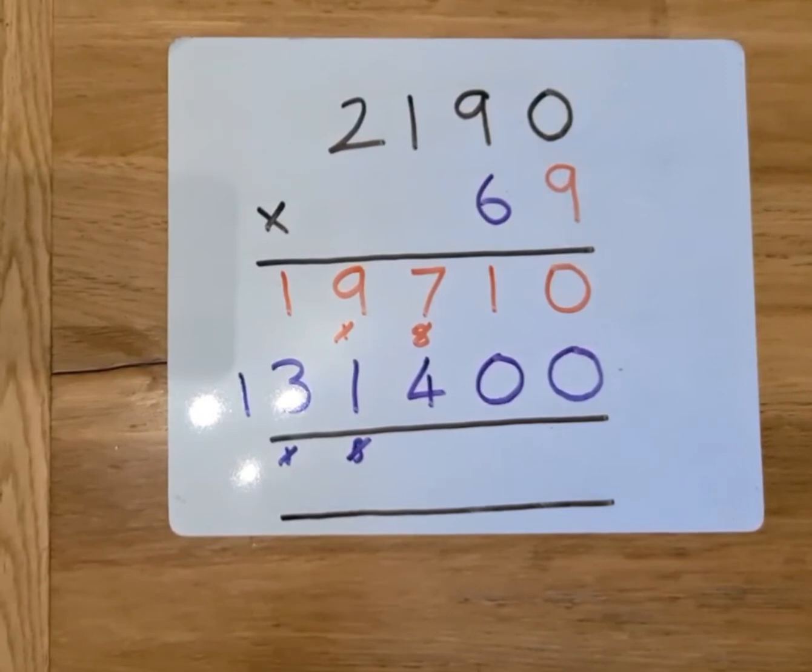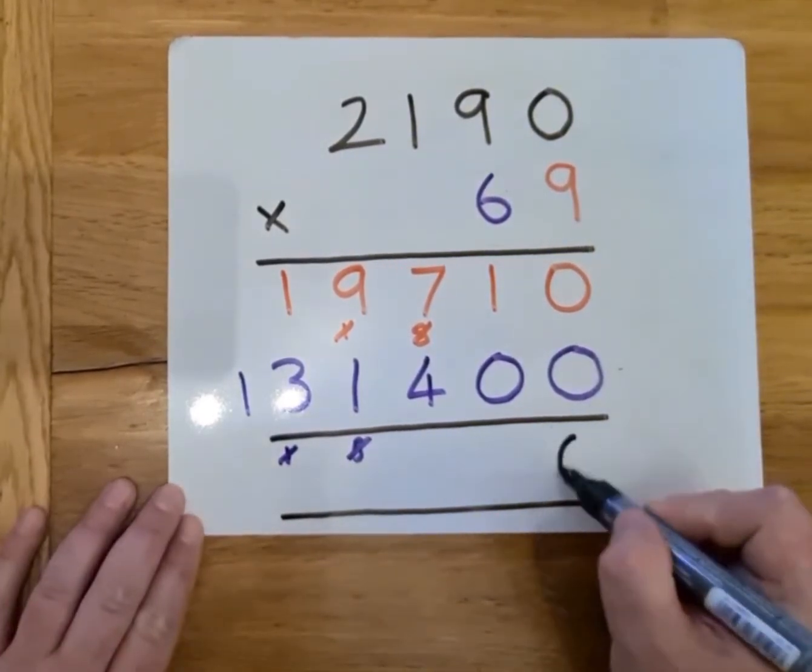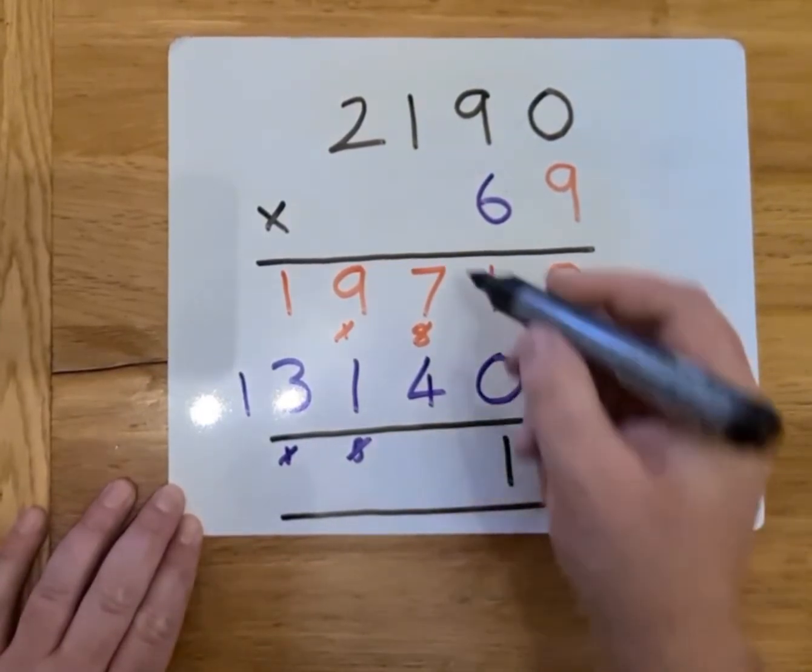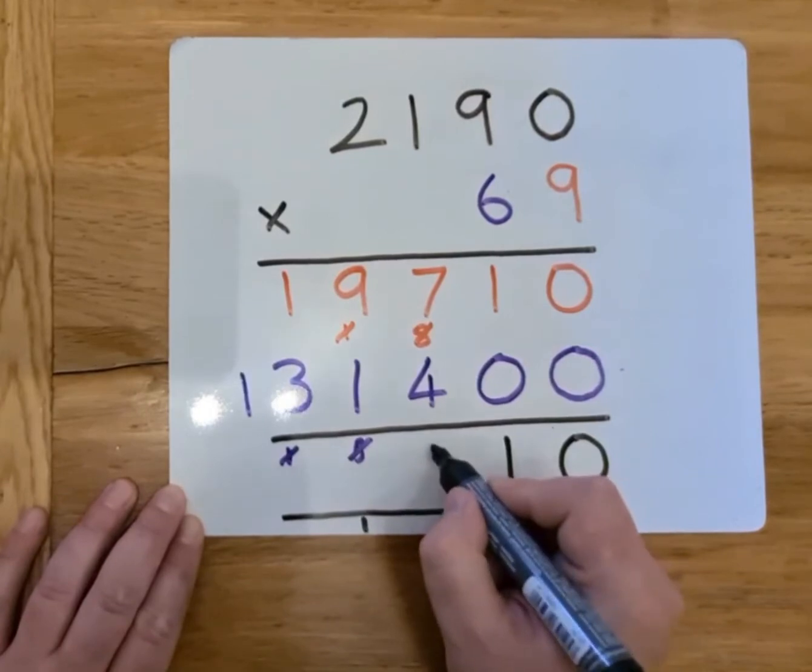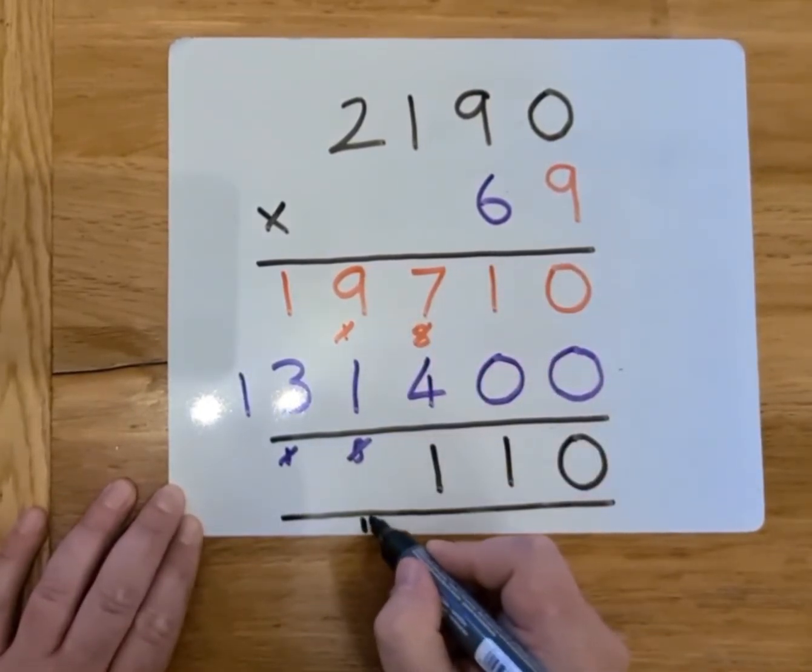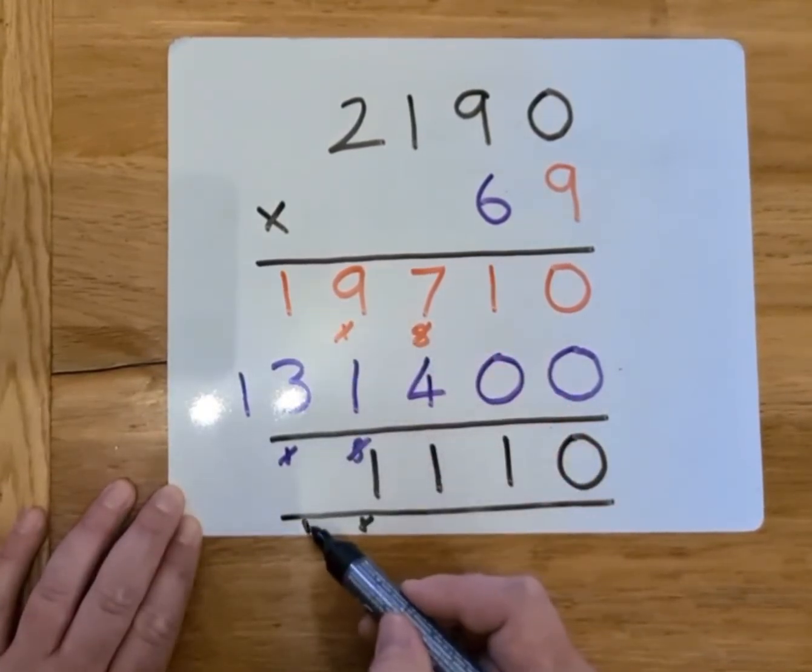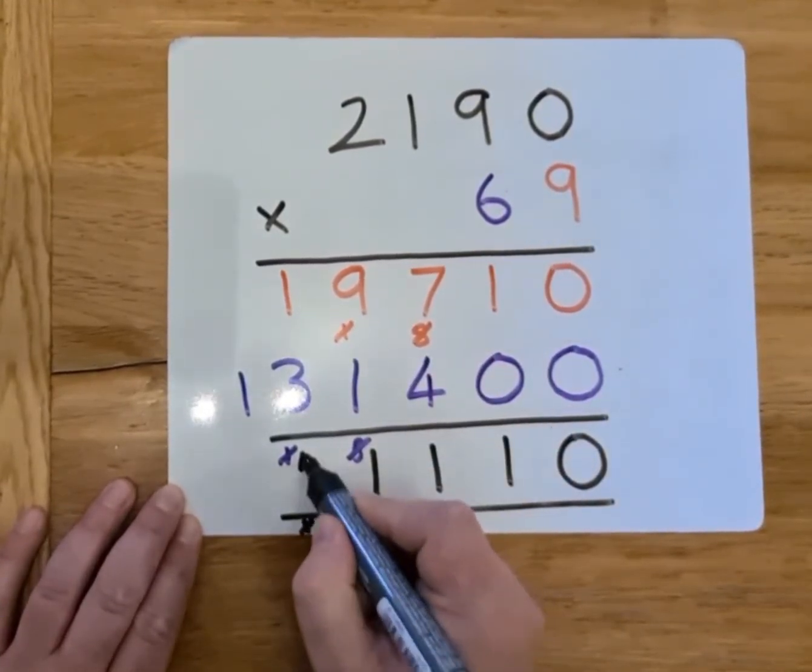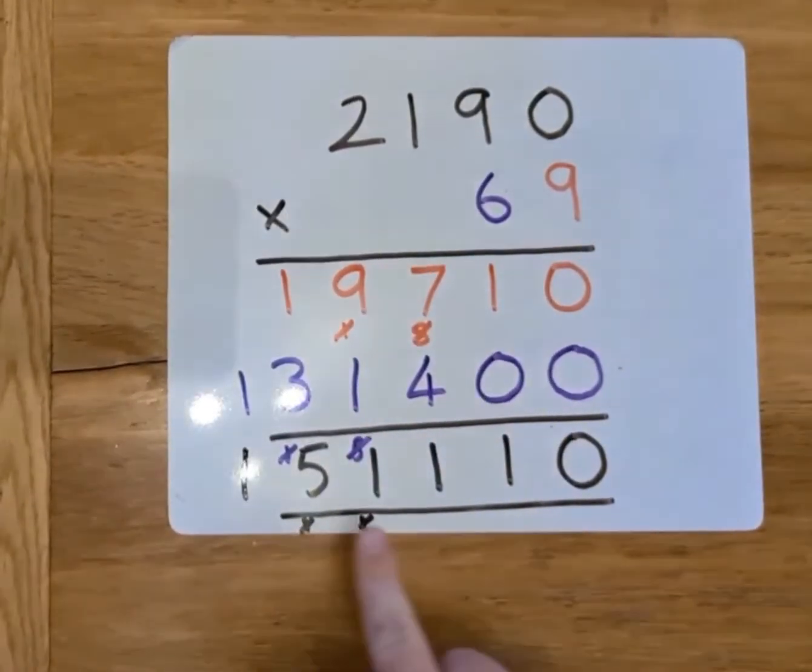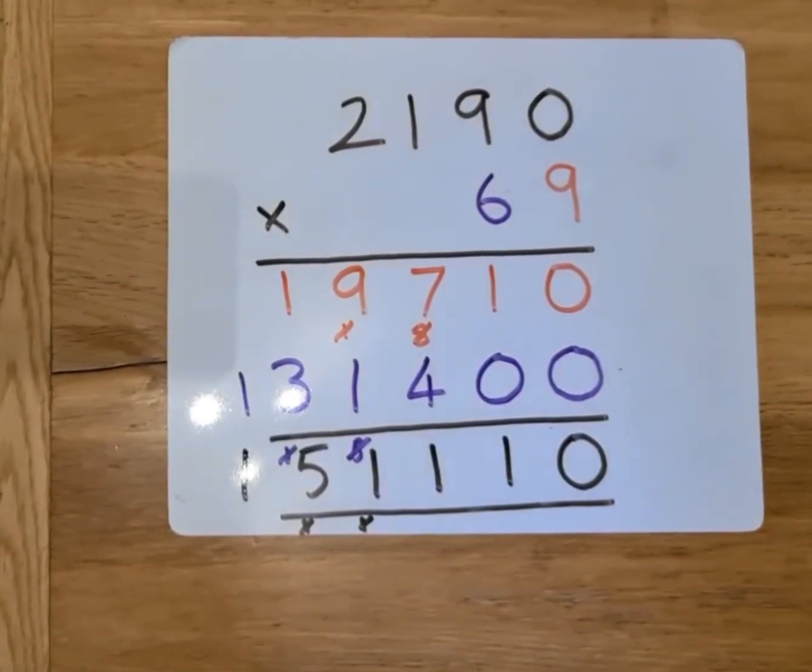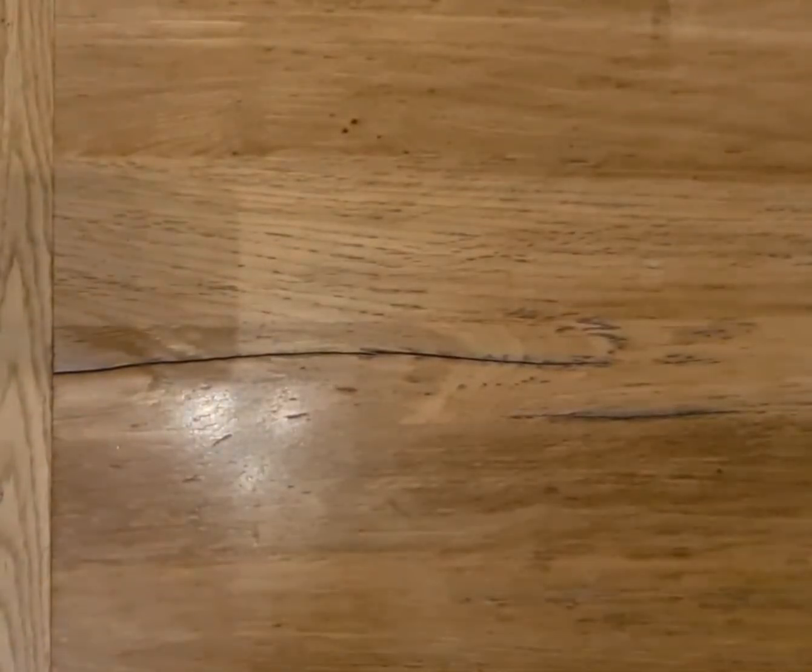What I'll do now is add them up to make sure everything is right. 0 add 0 is 0. 0 add 1 is 1. 7 add 4 is 11. So, I'll carry the 1 and put 1 there. 9 add 1 is 10. Add the extra 1 makes it 11 again. 1 add 3 is 4. Add the extra 1 is 5. And nothing add the 1 is 1. So, my final answer is 151,110. Let's have a look at the next question then. Another 4 by 2 digit number question.